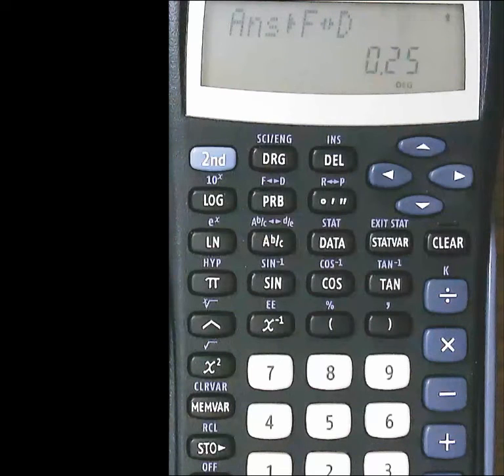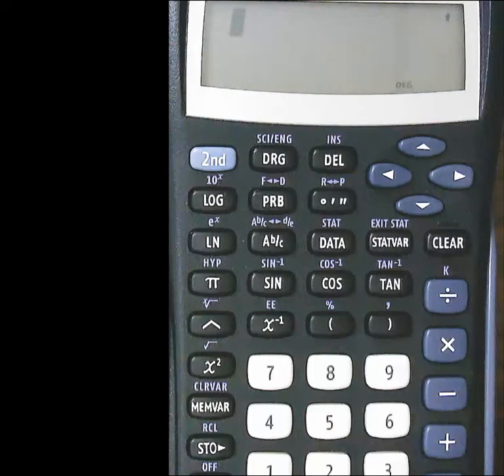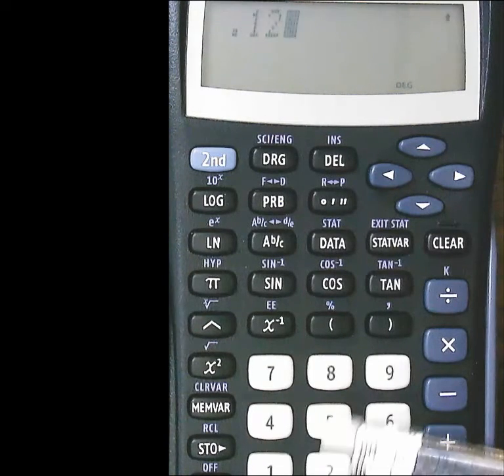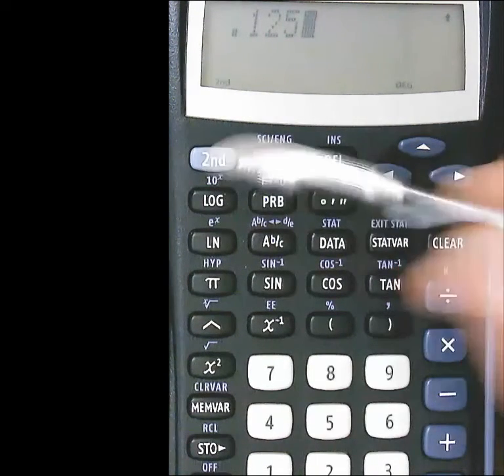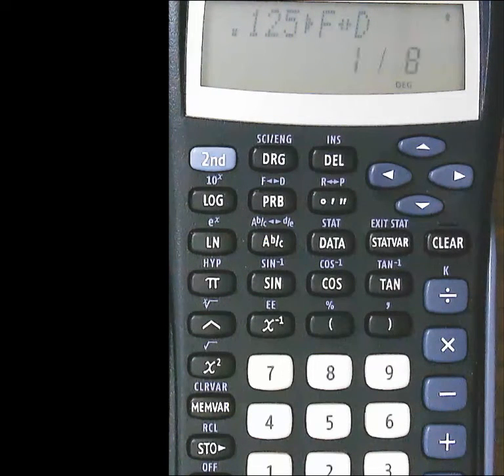That also works if you want to take any decimal and change it into a fraction. For example, I could do .125, and then 2nd, and then that fraction decimal button. And now it'll take that and change it into 1 eighth as a fraction.